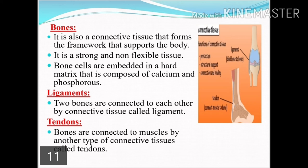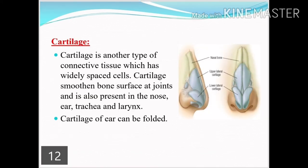Ligaments and tendons are both connective tissues that help connect muscles and bones. Ligaments connect two bones to each other, while tendons connect bones to muscles. Cartilage is also a type of connective tissue with widely spaced cells. Cartilage is smooth and present at joints — we can fold it. The nose, trachea, larynx, and ear are made up of cartilage, which is so smooth it can be folded easily.